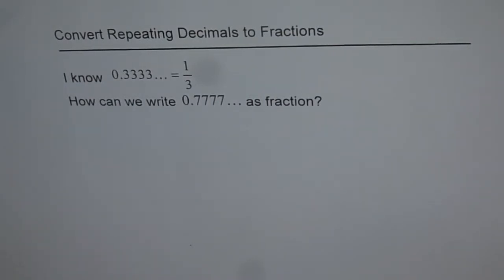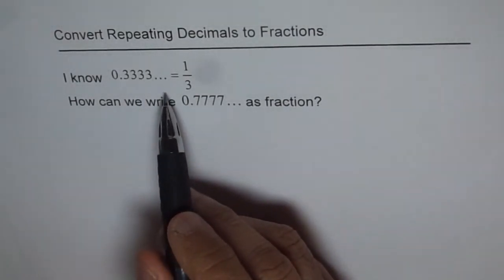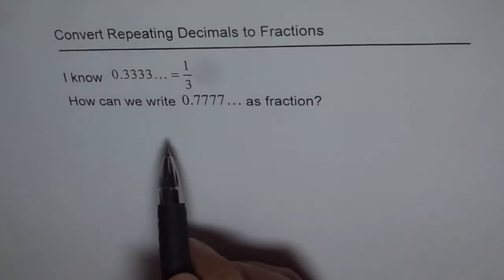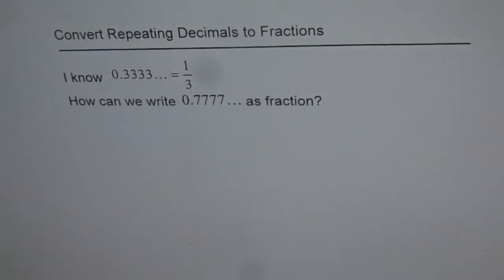Convert repeating decimals to fractions. I know that 0.3333 recurring equals 1 over 3. But how can I write 0.7777 as a fraction? Well, that is a question which has been troubling me a lot. Let's try to figure out.